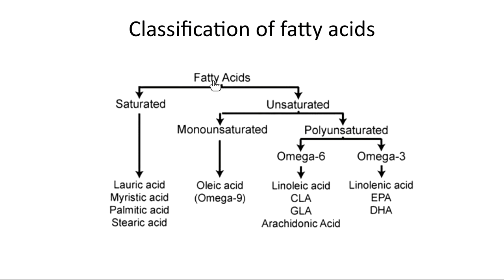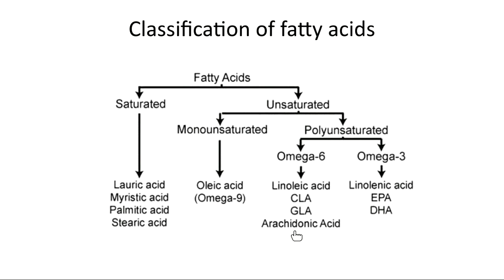The classification of fatty acids: saturated fatty acids are solid and unsaturated are liquid. Saturated compounds include lauric acid, myristic acid, palmitic acid, and stearic acid. Unsaturated compounds include monounsaturated — such as oleic acid (omega-9) — and polyunsaturated — such as omega-6 linoleic acid, omega-3 linolenic acid, and arachidonic acid. These are all important fatty acids required for a healthy person.